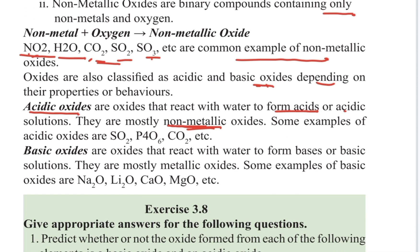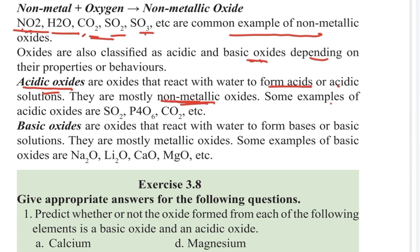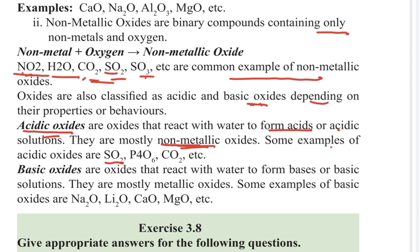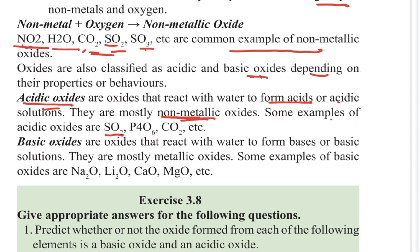Some examples of acidic oxide are sulfur dioxide, phosphorus oxide, and carbon dioxide. These are called acidic oxides.